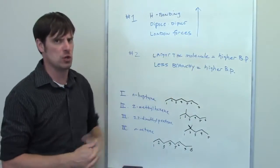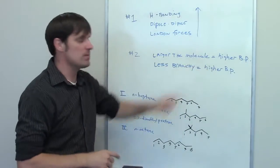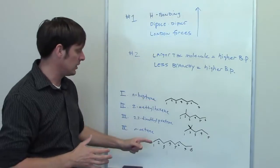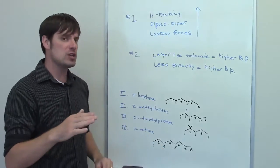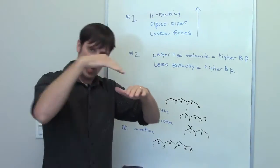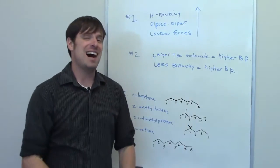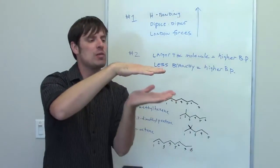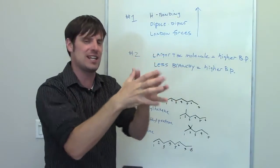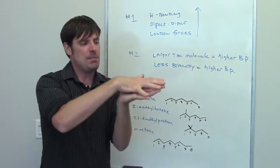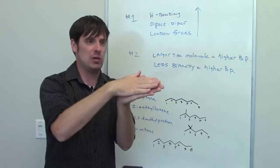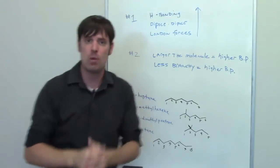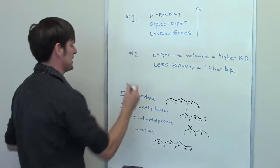Rule number two is: the larger the molecule, the higher the boiling point generally speaking, and less branchy means a higher boiling point. Which of these is the largest? N-octane — no branching, a nice straight sawtooth molecule. That molecule is going to have the highest boiling point. Because it's nice and straight with no branches, N-octane can stack on top of other N-octane molecules very, very tightly — they stick together like a big long piece of Velcro. It's going to take a lot of heat to get those molecules to break apart and convert from a liquid into a gas. So molecule number four, N-octane, is going to have the highest boiling point.